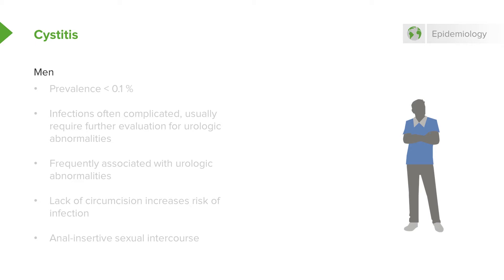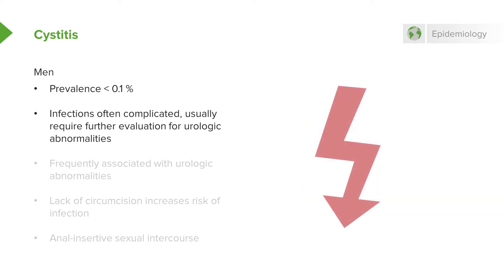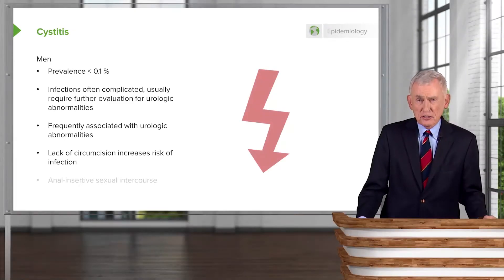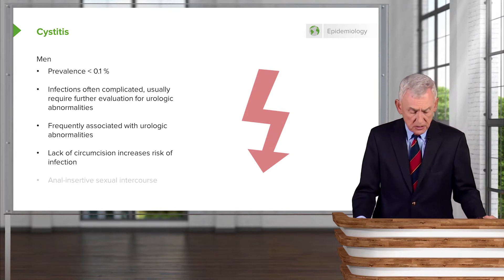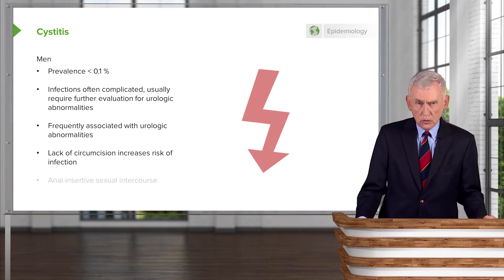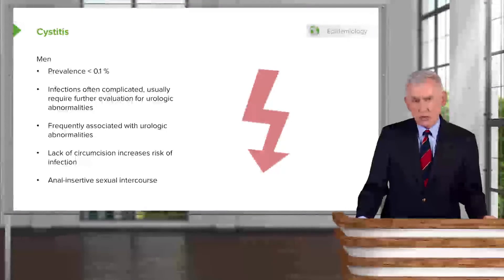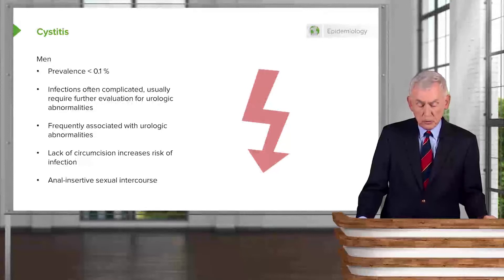Men, on the other hand, have a very low prevalence of cystitis — less than 0.1%. And when a man has cystitis, we have to look for a complication, because there's usually some kind of obstructive uropathy, duplicating collecting system, or some kind of anatomical explanation. We have to work them up for urologic abnormalities. The lack of circumcision predisposes some men to cystitis, and among men who have sex with men, anal-insertive sexual intercourse is a predisposing factor.